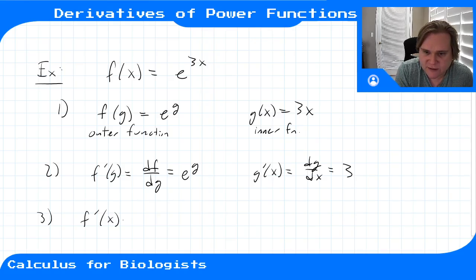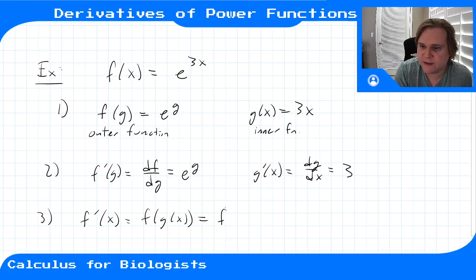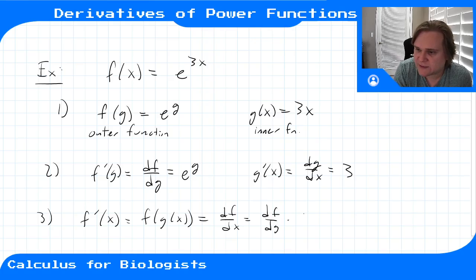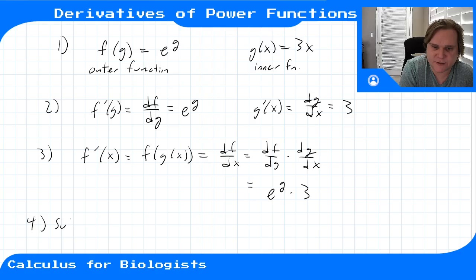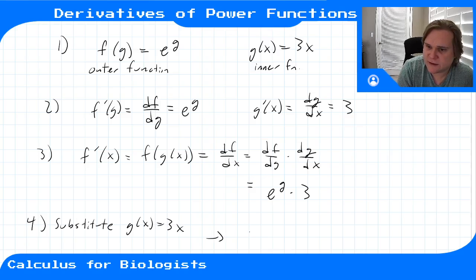For f(g(x)), the chain rule says df/dx = df/dg times dg/dx. That gives us e^g times 3. Then in step four we substitute in the inner function g(x) = 3x, and we get f'(x) = 3e^(3x).